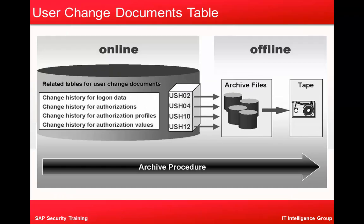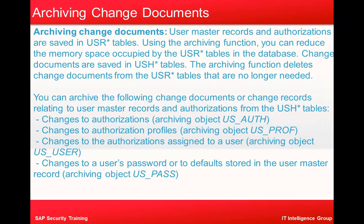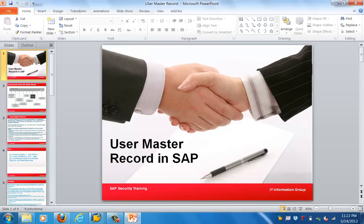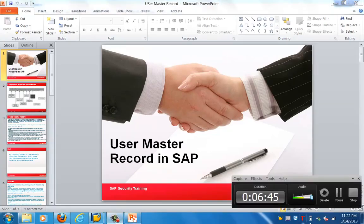The change user documents table tracks change history. For online changes, you have the change history for logon data in USH02, change history for authorization in USH04, change history for authorization profiles in USH10, and change history for authorization values. These documents can also be archived. That is pretty much what I wanted to cover in this training session. Thank you for joining and have a nice day.